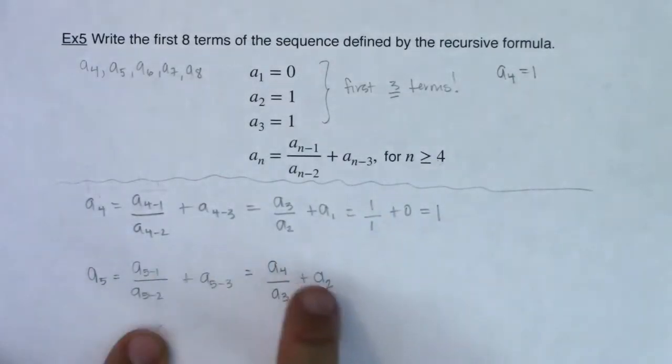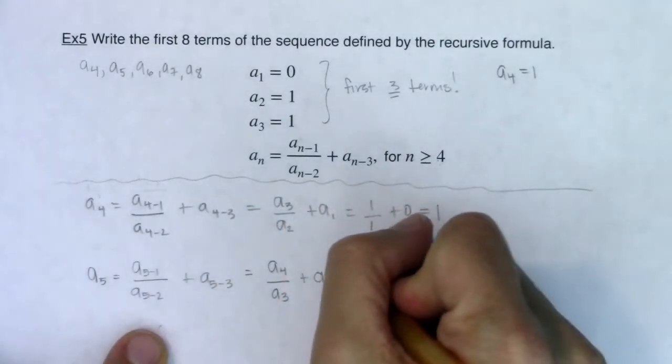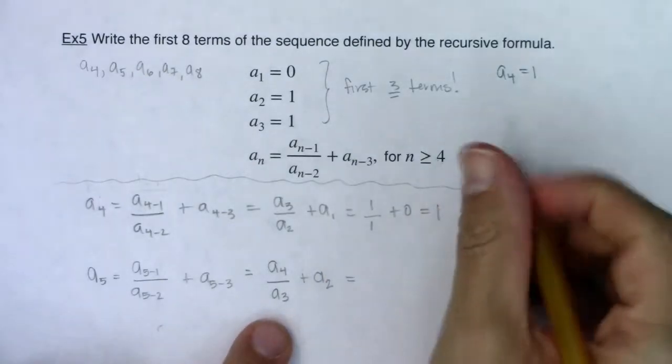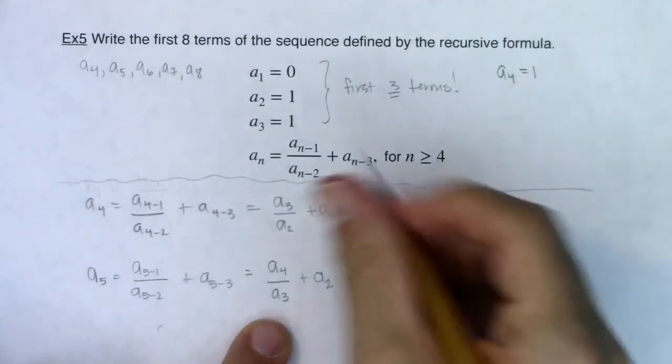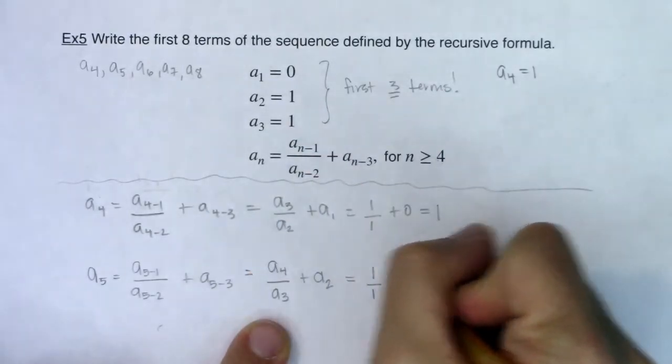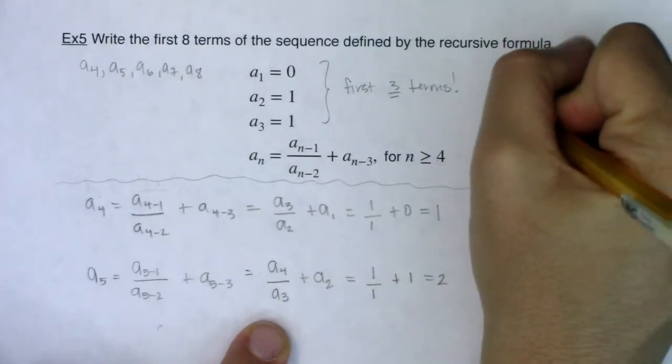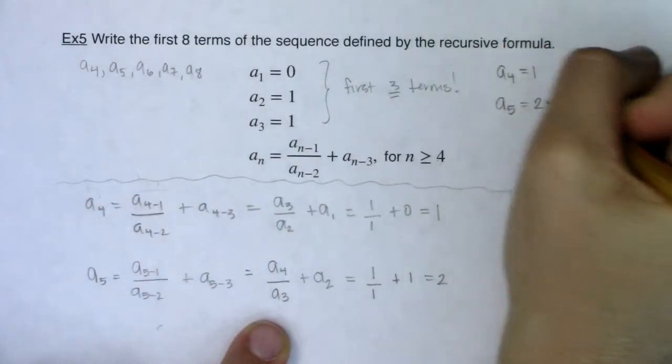So you see a sub five is defined in terms of the previous terms, right? Same deal with a sub four, defined in terms of previous terms. Let's substitute. We found a sub four, that was one. A sub three was also one, and a sub two was also one. So I have one over one plus one, that's going to be equal to two. So a sub five is equal to two.